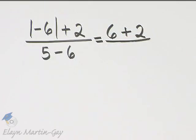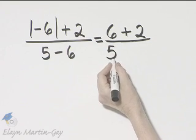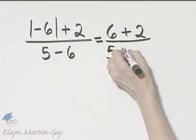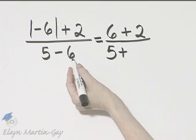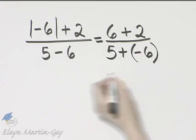Separately, we'll look at the denominator. This is subtraction. If you'd like, you can write it as the first number, 5, added to the opposite of the second number, 6, and the opposite of 6 is negative 6.